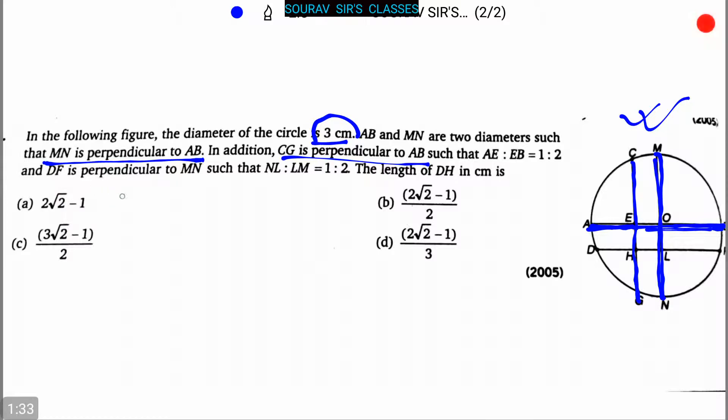And DF is perpendicular to MN, which is this one. DF is perpendicular to MN such that NL, this portion, is to LM which is this portion, is equal to 1 is to 2.